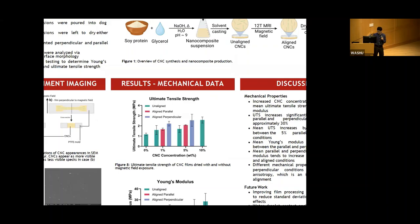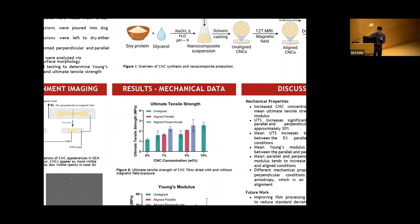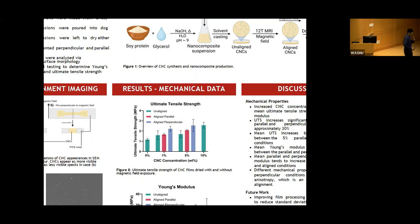For mechanical testing, we stretched the nanocomposite films in the long direction using clips until fracture. The ultimate tensile strength is the maximum force over the cross-sectional area endured. Increasing concentration of cellulose nanocrystals leads to a trend of increasing ultimate tensile strength. The difference is significant between 0% and 10%, though not significant between 0, 1, and 5%, likely due to variability within test groups given our large standard deviations.